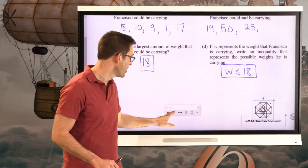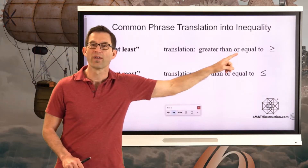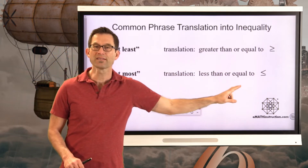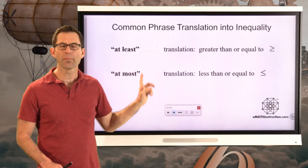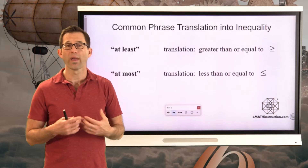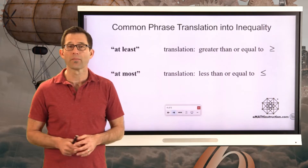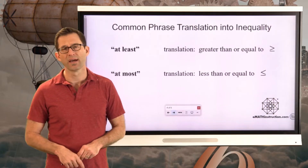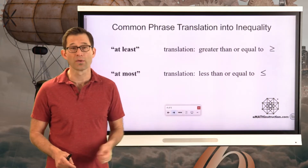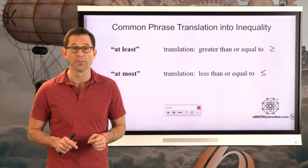In fact, the phrase 'at most' almost always translates into a less than or equal to. To summarize: 'at least' translates to greater than or equal to; 'at most' translates to less than or equal to. These two phrases come up a lot in real world problems. You might say I got at most six hours of sleep last night — which could mean two hours, five and a half hours, or six hours.